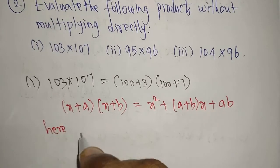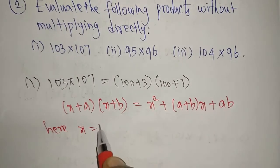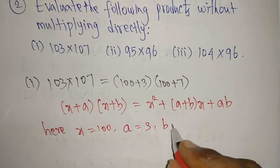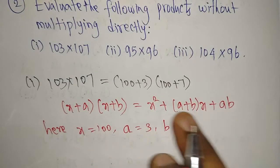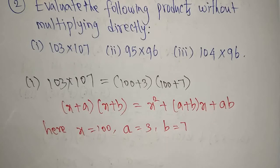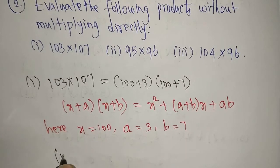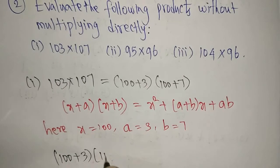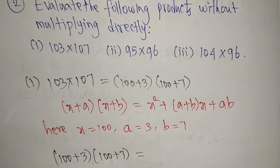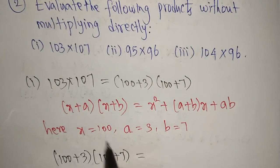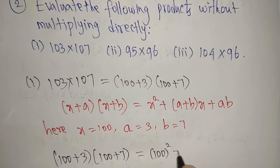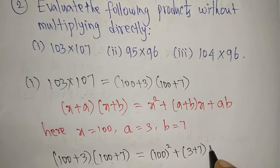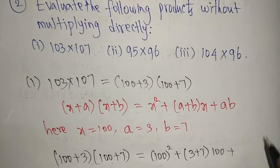Here the value of x is 100, the value of a is 3, and the value of b is 7. Now substituting these values into the formula: x squared means 100 squared, plus a plus b means 3 plus 7, into x which is 100, plus a into b means 3 into 7.